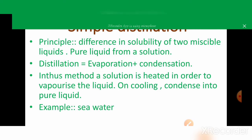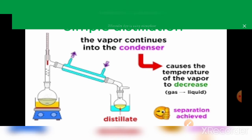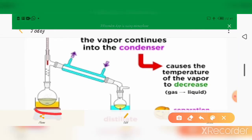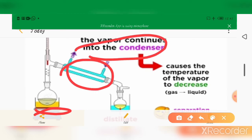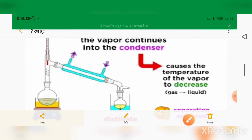In this method, a solution is heated in order to vaporize the liquid. The vapor passes into the condenser, causing the temperature to decrease, and the gas is converted into liquid form. The condensed substance is collected in the receiver and is known as the distillate. For example, sea water can be purified by simple distillation.